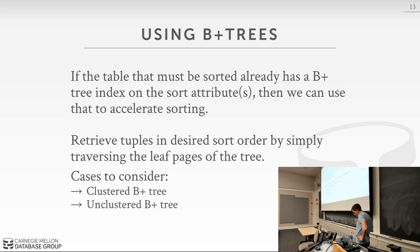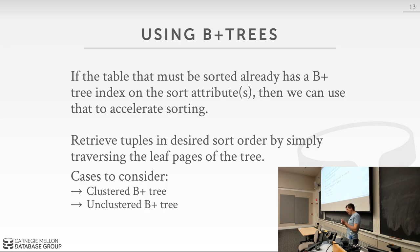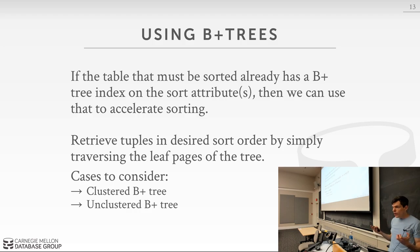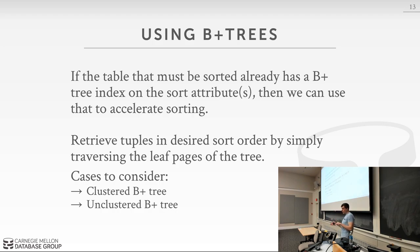We can use B+ trees to speed things up, with the same distinction as before between clustered and unclustered indexes. In general, if you need to sort and have a B+ tree indexed on the key you want to sort by, every database system will try to use that instead of doing the external merge sort. You're already paying the upfront cost of maintaining the index's sort ordering along the leaf nodes, so it's faster to use that than to compute the sort order on the fly.